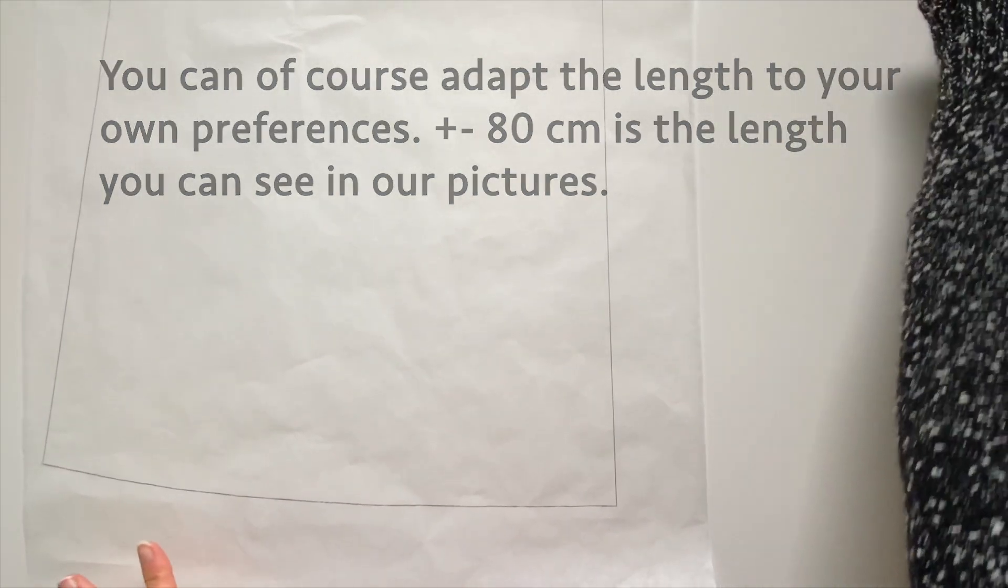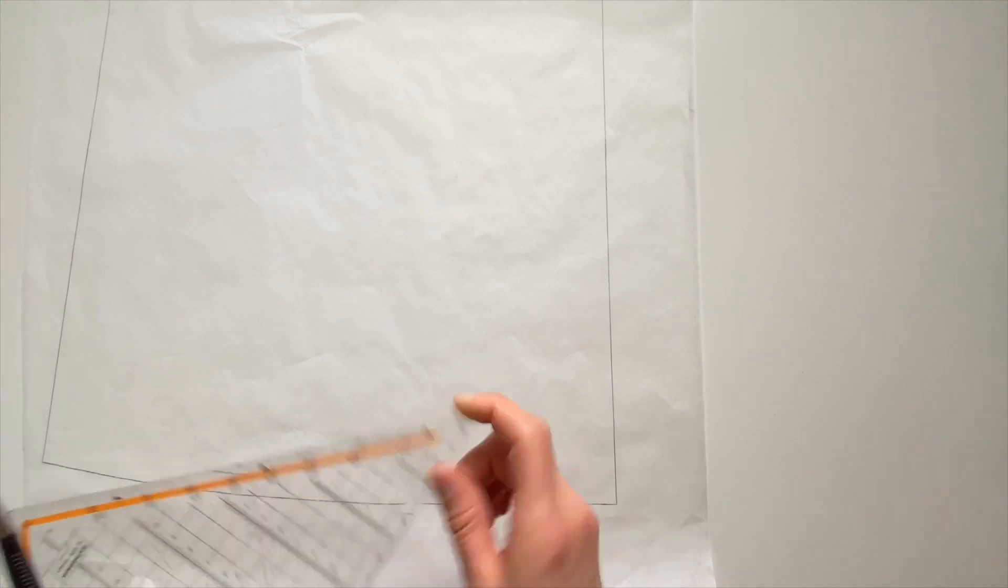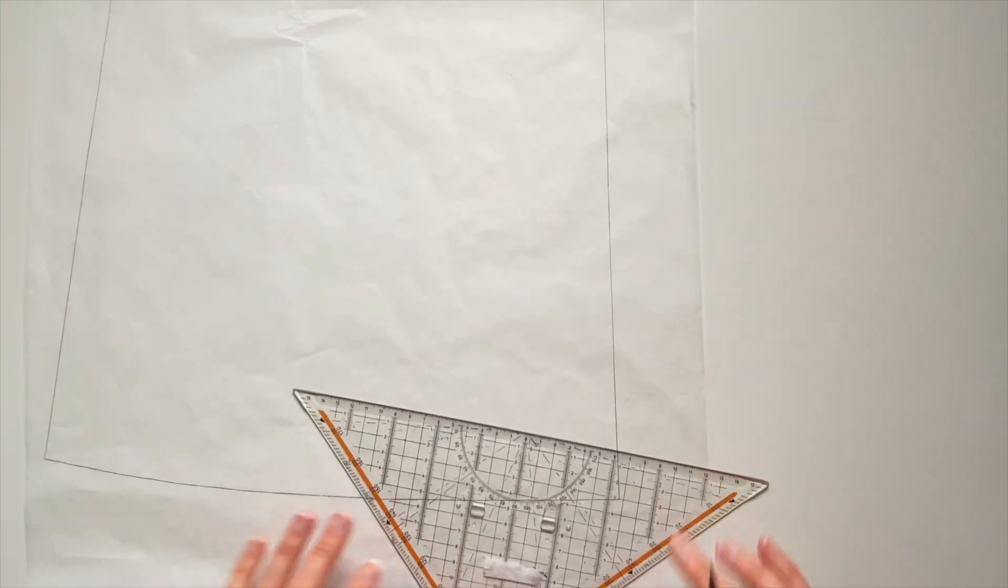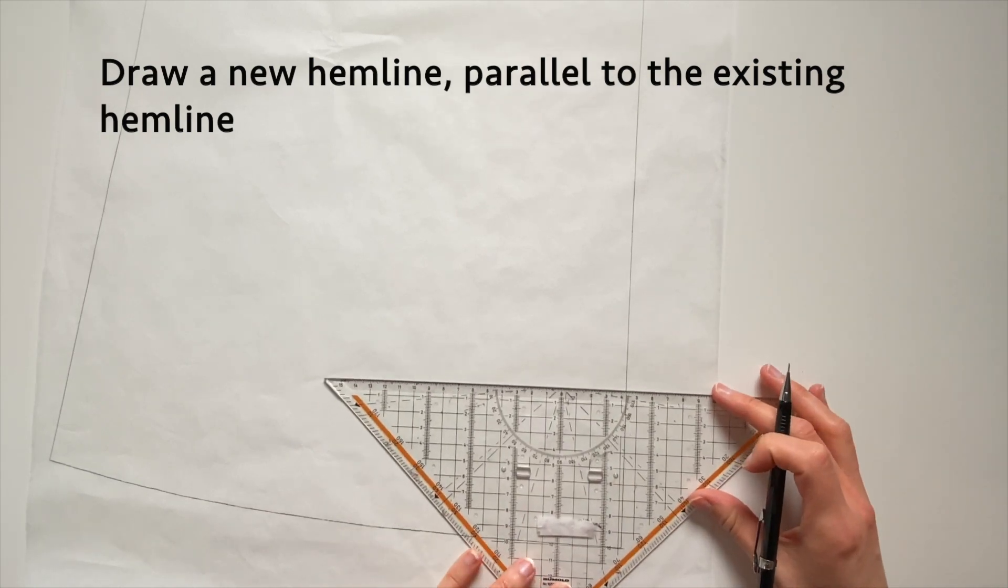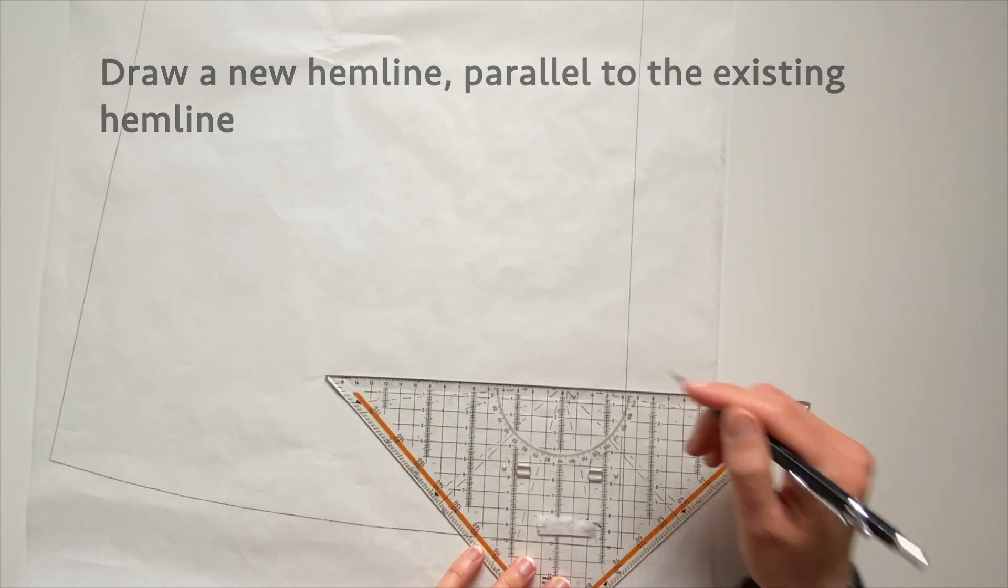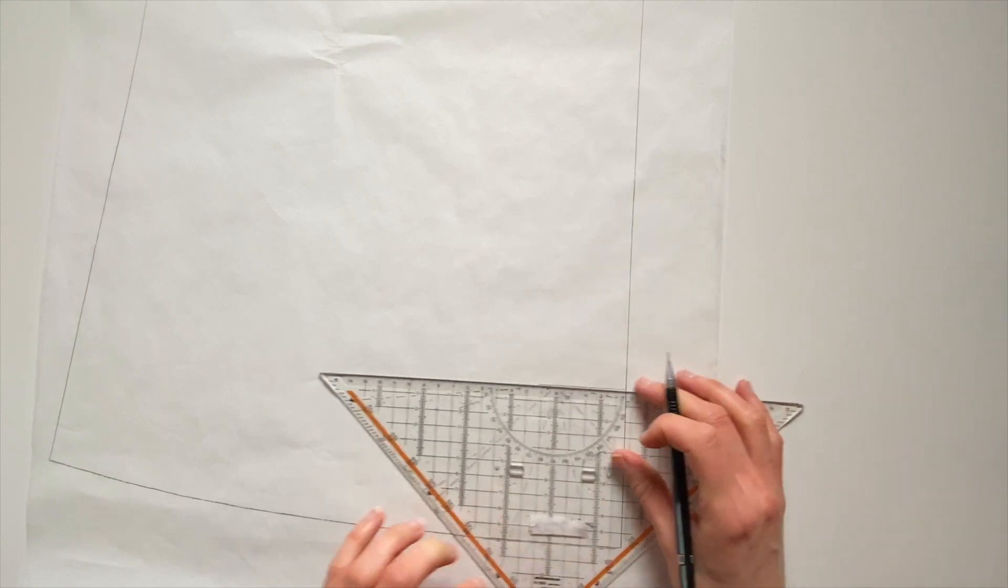In our pictures or the models we adapted, we use a skirt length of about 80.5 centimeters to be exact. I'm just gonna shorten it with 10 centimeters and I'm gonna do this parallel to the hemline. So this piece is actually not hard to adjust.